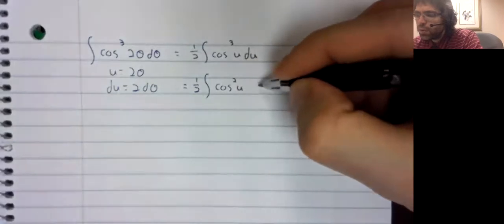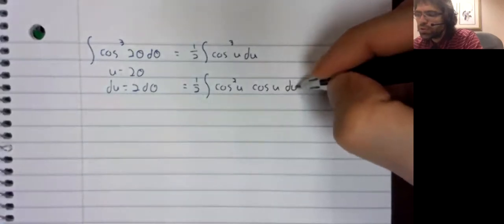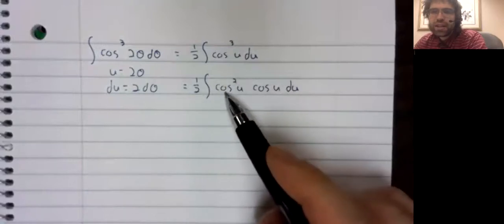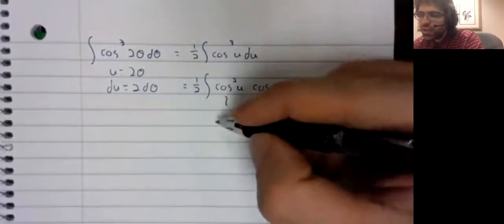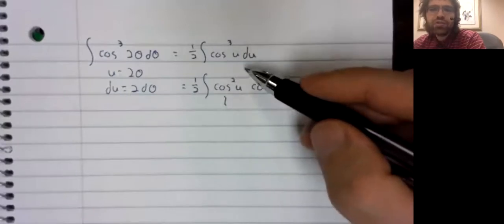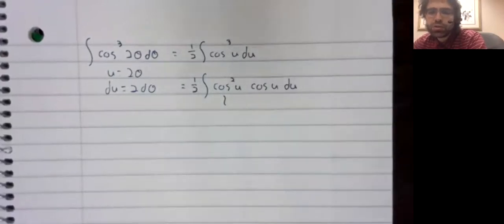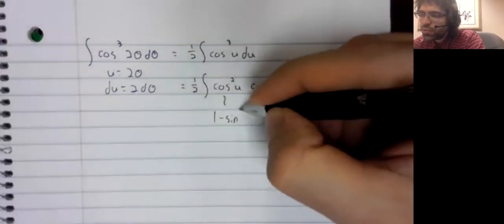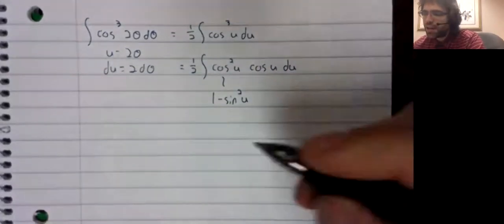So we'll pull a cosine out. This is already written as a cosine squared, we don't need to rewrite it. That is to say we don't need to rewrite it as a square raised to a power. It's already a square raised to the first power. We do have to rewrite it using the Pythagorean identity.